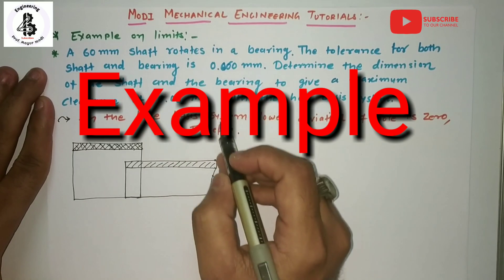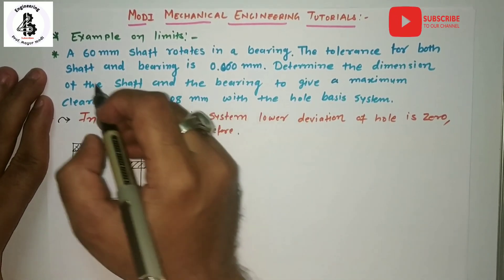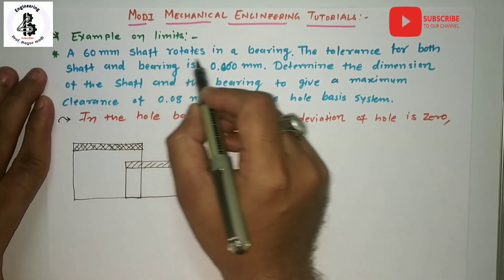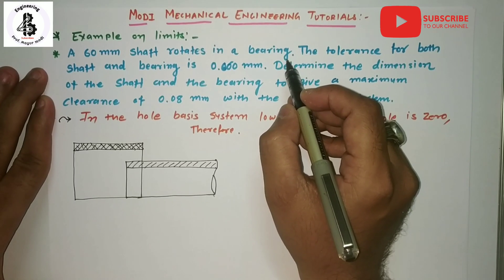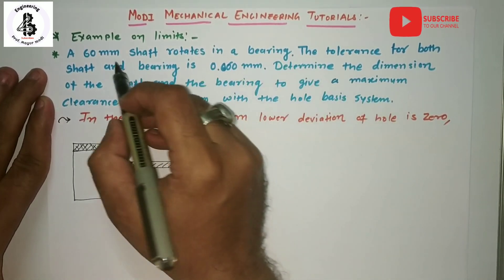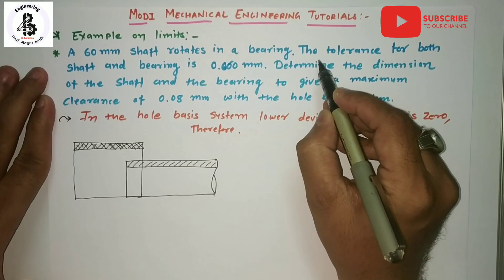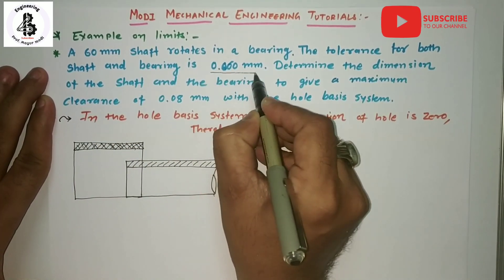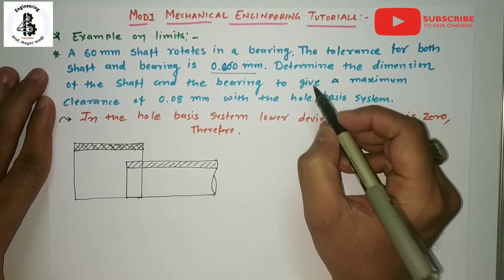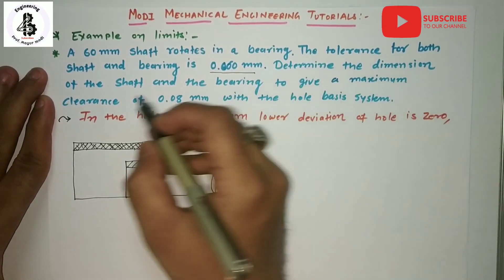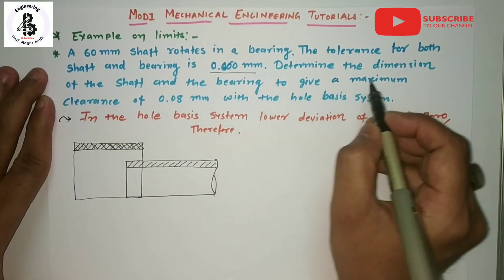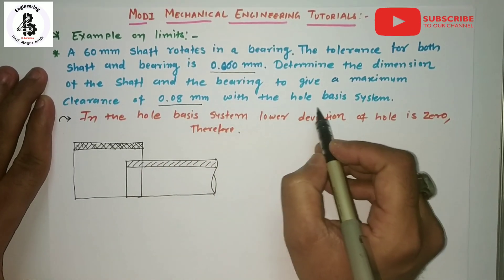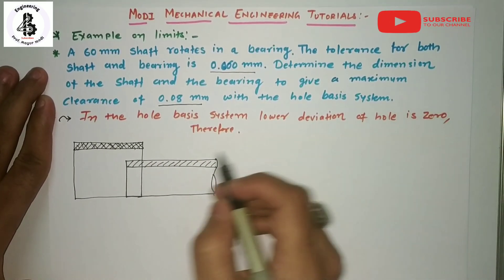The problem: a 60mm shaft rotates in a bearing, which is mounted onto the shaft. The tolerance for both the shaft and the bearing is 0.060mm. Determine the dimensions of the shaft and bearing to give a maximum clearance of 0.08mm with the hole basis system.